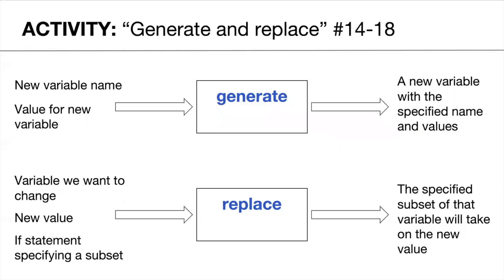Now that we've talked through data manipulation using generate and replace, this is a great time to practice on your own by doing what we call coding by hand — pretending you are the computer and creating new variables following the given syntax. Take a moment, click on the worksheet linked in the description below, and do numbers 14 through 18 to practice using generate and replace. Once you finish, we hope to see you back for part three, a self-directed portion where you'll get hands-on experience working with data yourself.